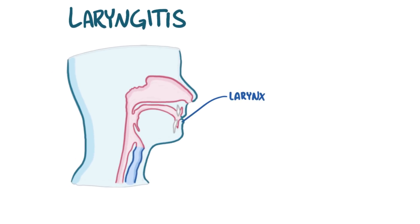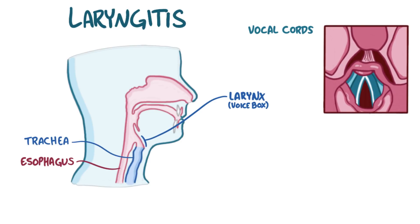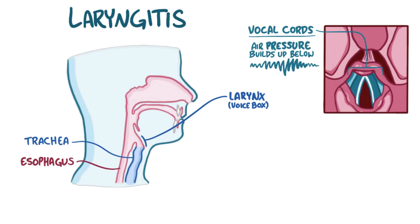The larynx is located in the upper portion of the neck, just below where the pharynx splits into the trachea and the esophagus. The larynx is also called the voice box because it contains the vocal cords, which are two folds of mucous membrane that can open and close like curtains. When they're closed, air pressure builds up below them, causing them to vibrate and produce sound when we speak.